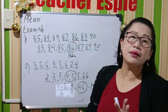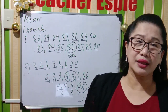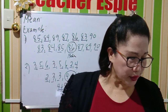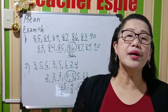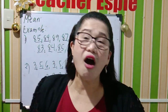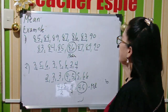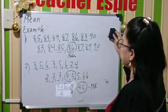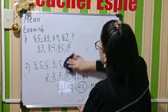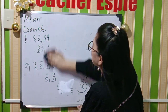Now let us talk about the mode. When we are talking about the mode, it is the number that occurs most often in the data. I will give you another example for the mode.